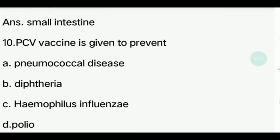Tenth question. PCV vaccine is given to prevent which disease? Options: Pneumococcal disease, Diphtheria, Haemophilus influenzae, Polio. Answer is Pneumococcal disease.